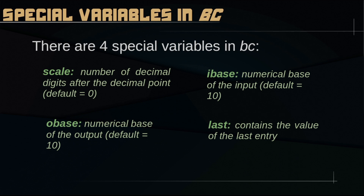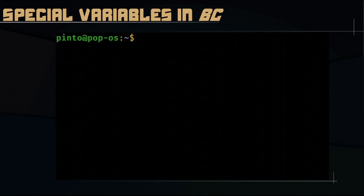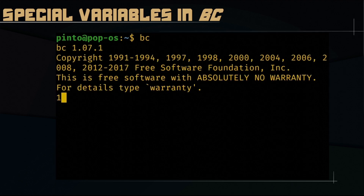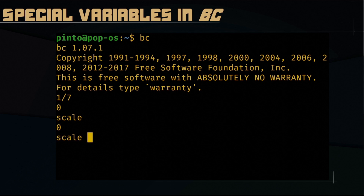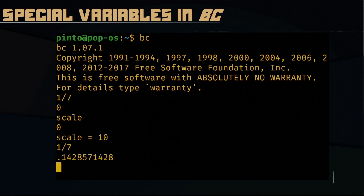So, when doing calculations, you can reference the last entry with 'last'. Why is scale so important? If we set scale to 0, which is the default, you can see that 1 over 7 is 0 — integer only calculations. But if you set scale to 10, then 1 over 7 is no longer 0, which is very important. We have to pay attention to this when using BC, because otherwise surprising results might happen.